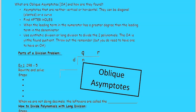You find these after finding the holes. When the leading term of the numerator has a greater degree than the leading term of the denominator, you'll have one of these. Use synthetic division or long division to divide out the two polynomials.